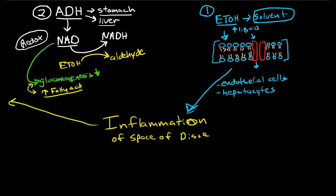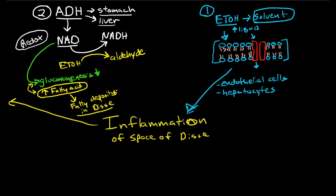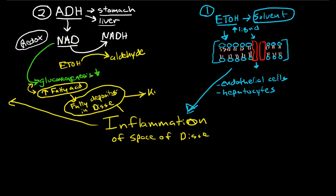Because if we drink large amounts of alcohol all the time, we are going to be chronically suppressing gluconeogenesis and chronically increasing fatty acid production. This causes fatty depositions in the space of Disse. The fatty acid depositions cause inflammation by activating Kupffer cells, and it initiates the production of cytokines in the space of Disse.